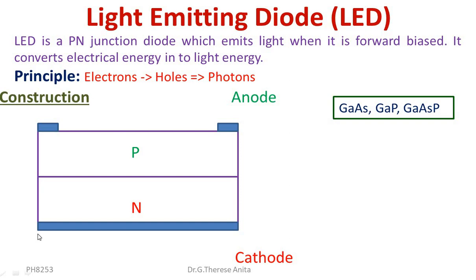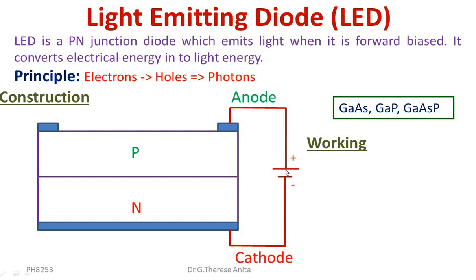When the PN junction is forward biased — that is, the positive terminal of the battery is connected to the P region and the negative terminal is connected to the N region — the depletion region is reduced and removed. There is no barrier at the junction, and electrons from the N side cross the junction and move into the P side.